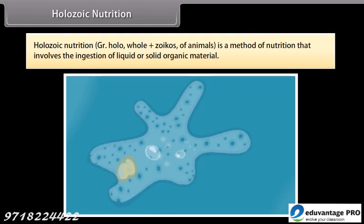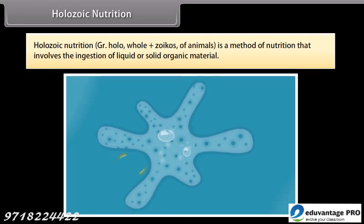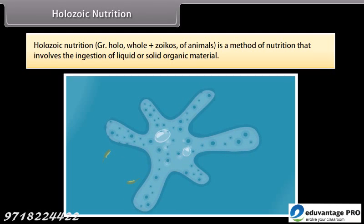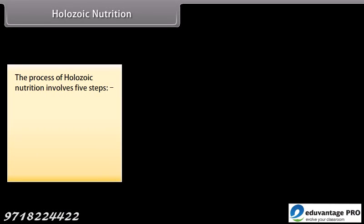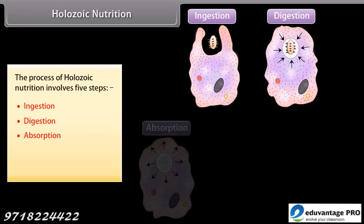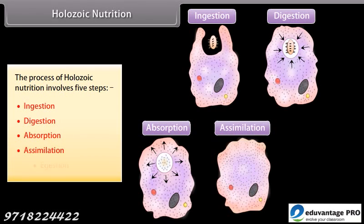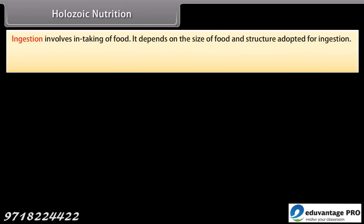Holozoic nutrition — 'holo' means whole and 'zoicos' means animals — is a method of nutrition that involves the ingestion of liquid or solid organic material. The process of holozoic nutrition involves five steps: ingestion, digestion, absorption, assimilation, and egestion. Ingestion involves the intaking of food, and it depends on the size of food and the structure adopted for ingestion.